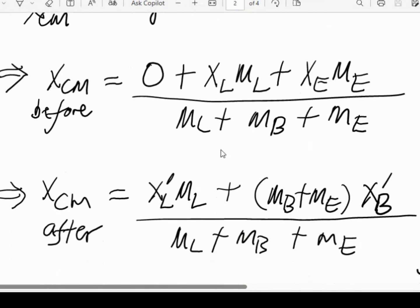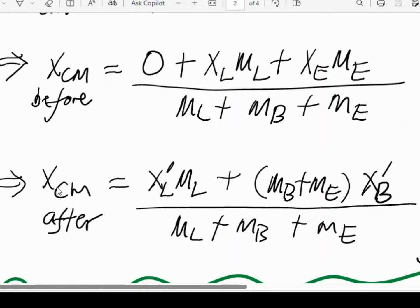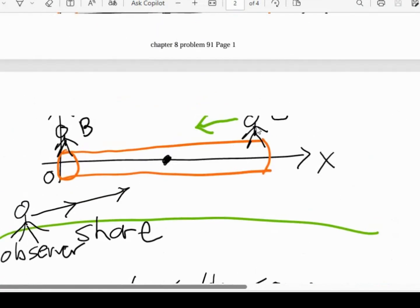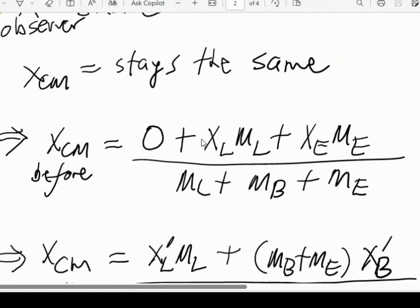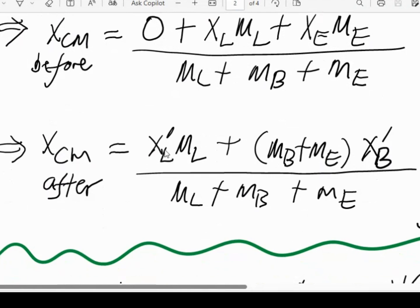And the center of mass after the movement, that is Ernie travels all the way to the left end of the log. That center of mass is given by the new position of the log, which is X prime L.